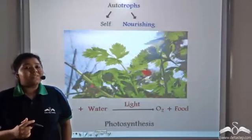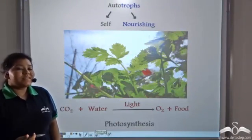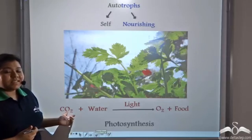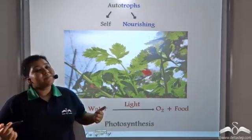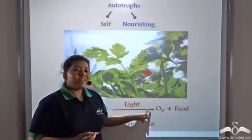So photosynthesis is the process by which green plants take up carbon dioxide, water, and in the presence of light, it forms food and oxygen.